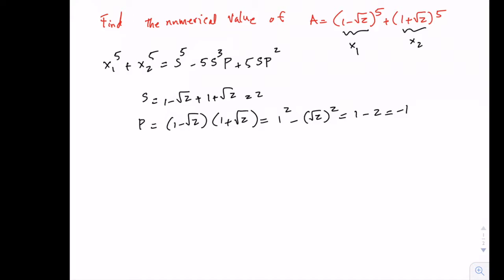And from these two, we can find x₁^5 + x₂^5 = 2^5, which is the sum to the power of 5, minus 5 times 2³ times (-1) plus 5 times 2 times (-1)².